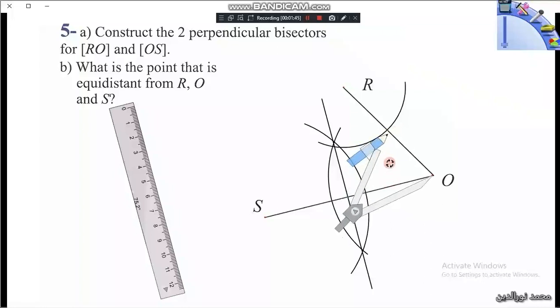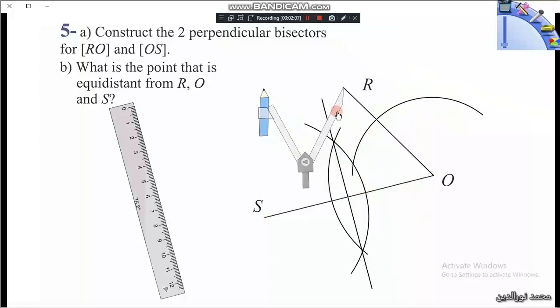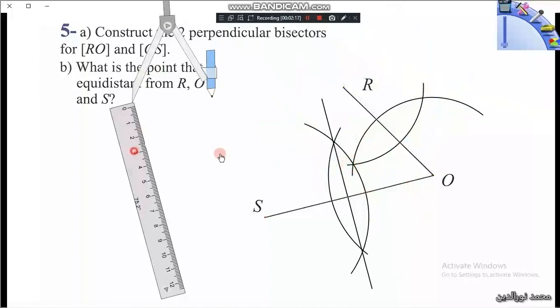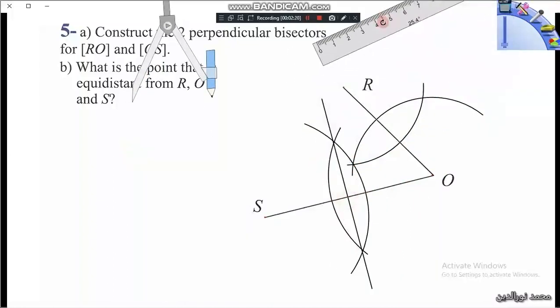So there is a mistake. We have to open the compass a little bit more than the half of the segment RO, so we have to widen the compass a little bit and then we draw the arc. Using the same opening, we will draw the other arc of center R, and then we draw a line joining the two points of intersection of these two arcs.